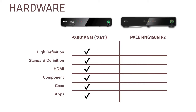The RNG150N P2 digital set-top box is also designed to display the X1 platform guide. Like the XG1, it works in widescreen high definition mode as well as standard definition mode. It has the same outputs, including HDMI, component video, and coax. There are a few features from the XG1 that are not included on the RNG150N, such as the DVR and a few of the apps. The RNG150N is designed for customers who are ordering a package as X1 eligible but may not need the DVR. Eligibility and pricing will be covered later, but just know that the customer can enjoy the benefits of the X1 platform on either device.